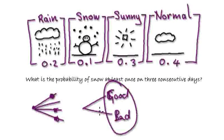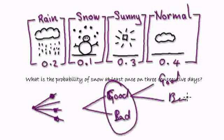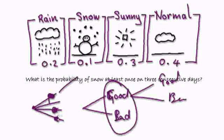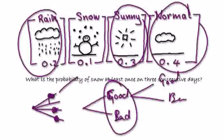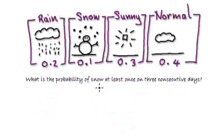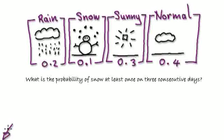So this here represents your good day. On your second day it could be good, and then bad, and so on. Or you could draw a map of all the things, but it could be complicated. If you want to be cunning, merge the rain, the sun, and the normal together and just call it bad. Anyway, it's up to you how you want to do it. Just somehow work out the probability of it snowing at least once on three consecutive days. So press pause and have a go.